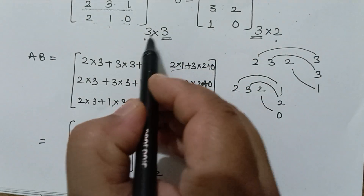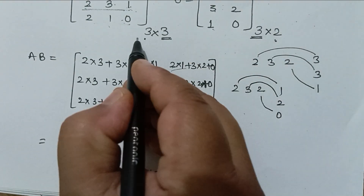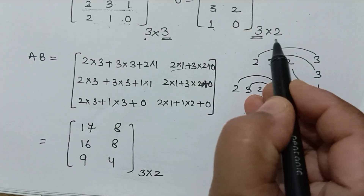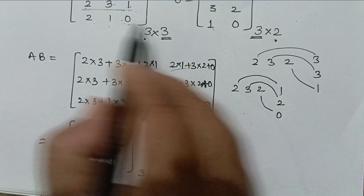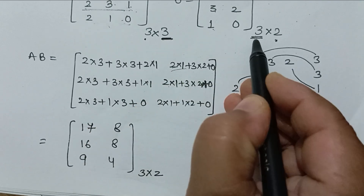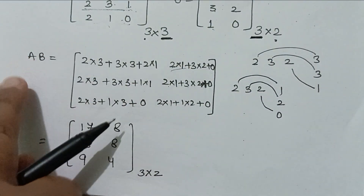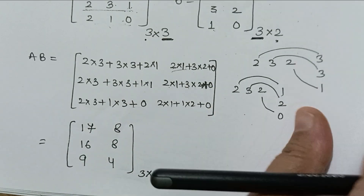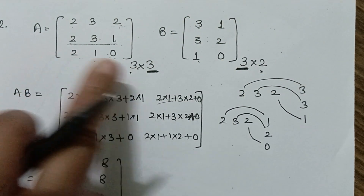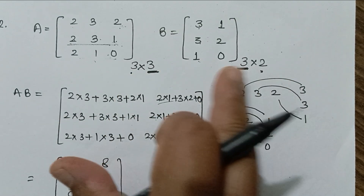You can see that the resulting matrix has 3 rows and 2 columns, confirming the order is 3 x 2. You can multiply two matrices only if the number of columns of the first equals the number of rows of the second. This is the value of AB, where the order of A is 3x3 and the order of B is 3x2.